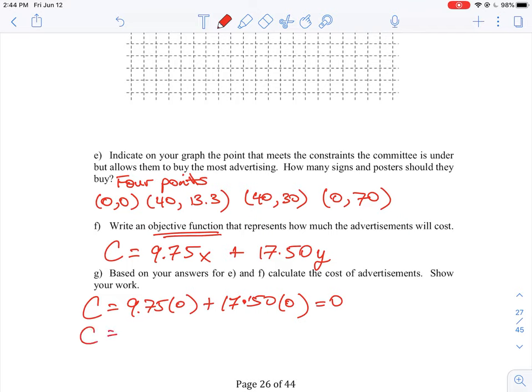The next equation here is we can buy 9.75 times 40 plus 17.50 times 13. We won't use 0.3 there. And if we work that out, we get about $617.50. But we still should check the other ones here. So that lets us buy 40 and 13.